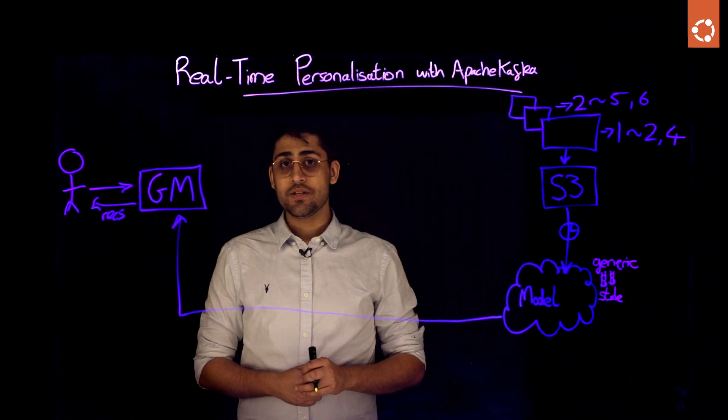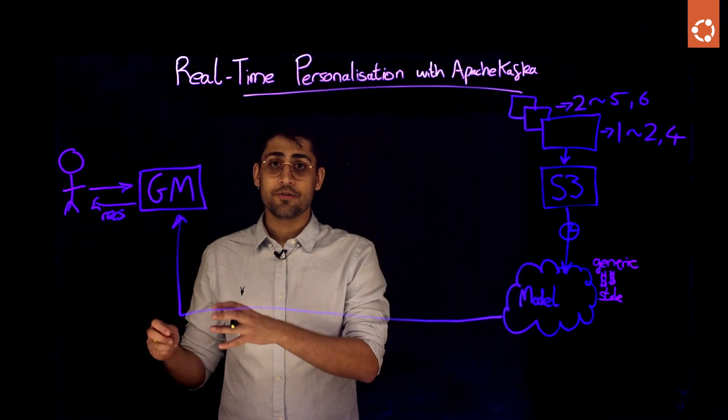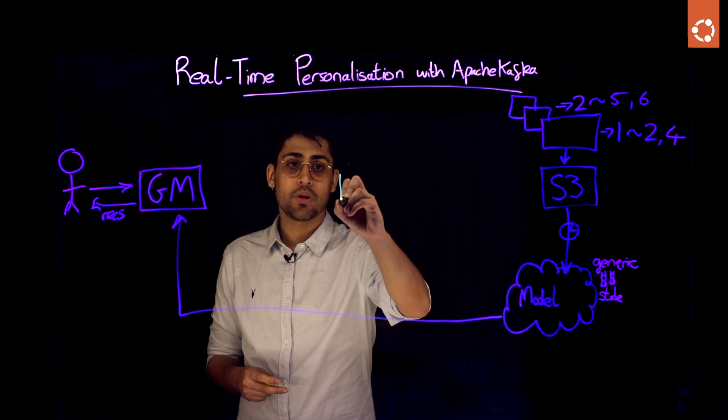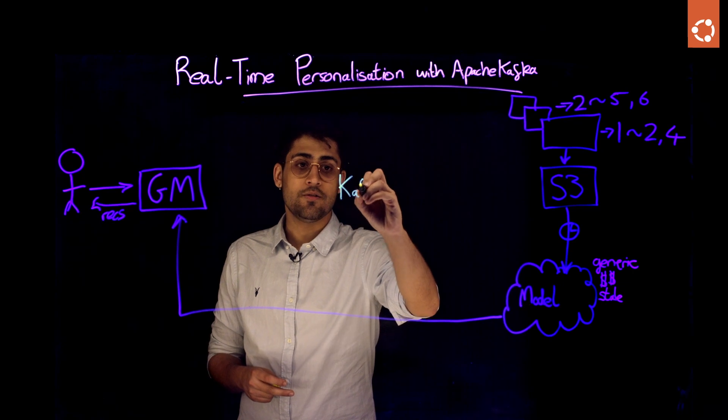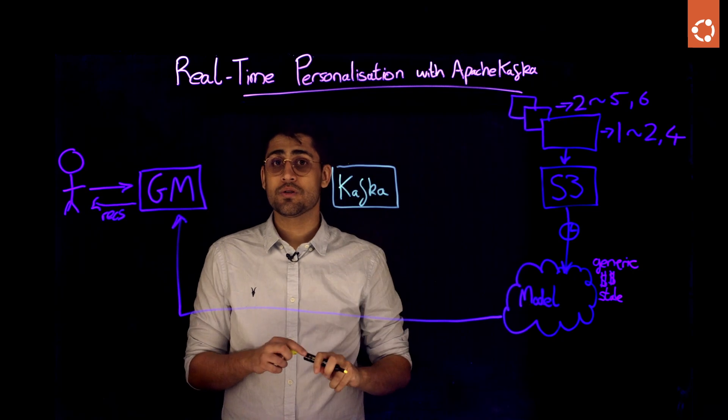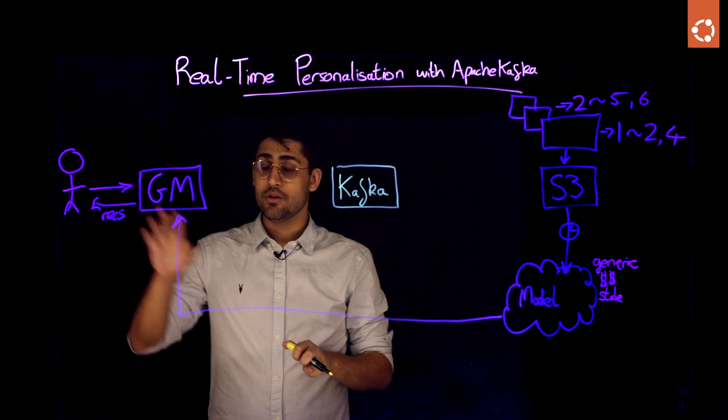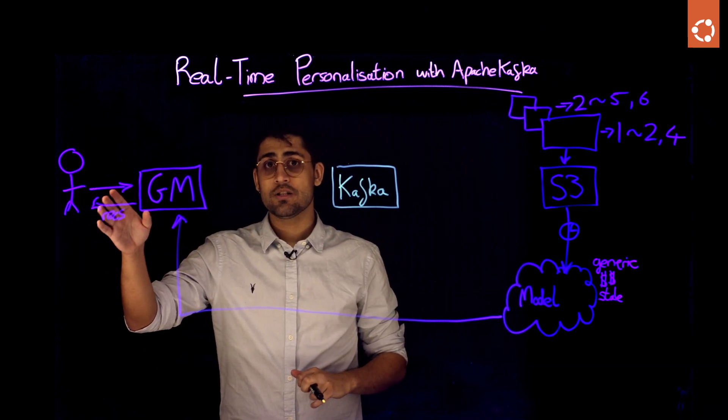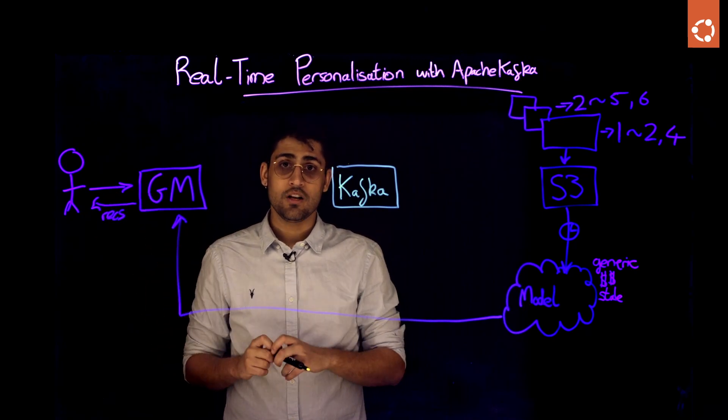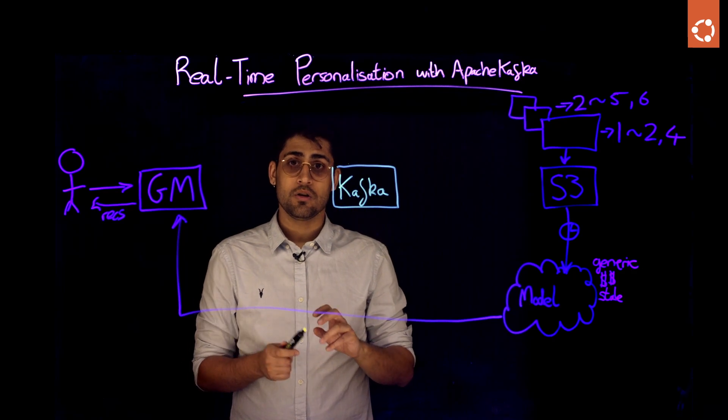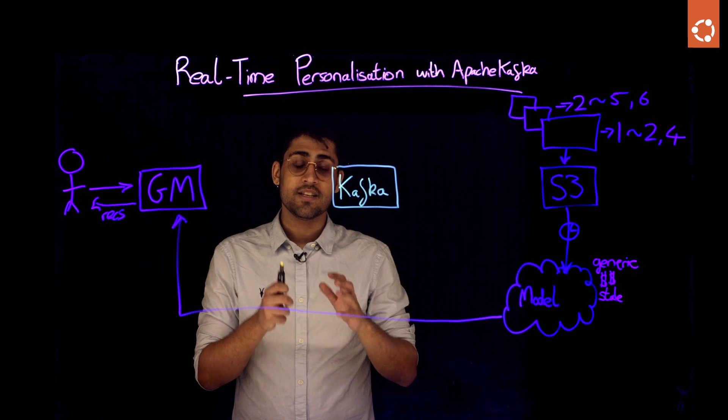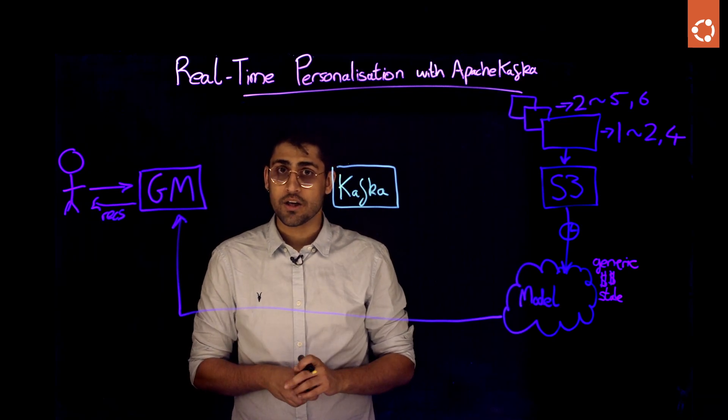One possible solution to this is to use Apache Kafka and Apache Spark. Let's start by talking about Apache Kafka. Apache Kafka was developed by LinkedIn for basically exactly this use, for taking user interactions in real time and feeding that into reporting, analytics, and machine learning models so that we can make actionable results on things as they are happening.